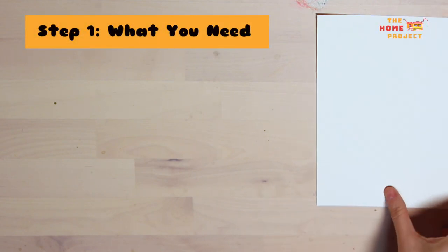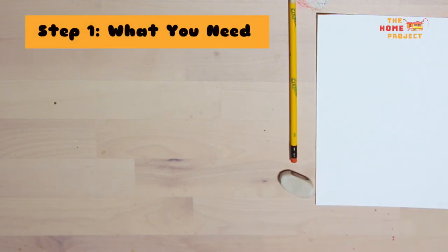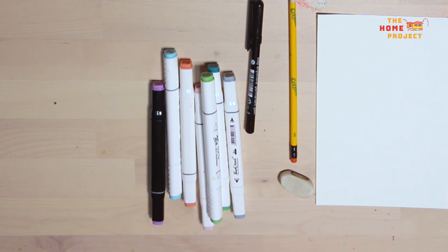For this activity today you will need some paper, a pencil and a rubber. If you'd like you can also use a black pen for outlines. You can color it in with any sort of colors that you have around the house.